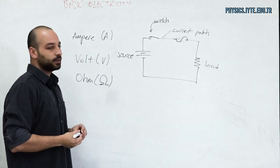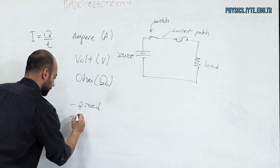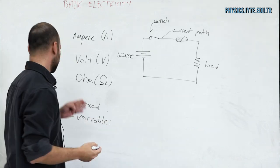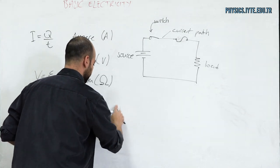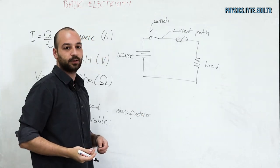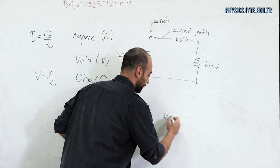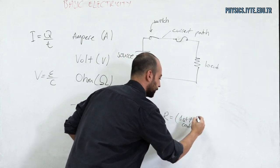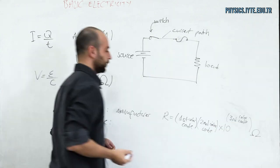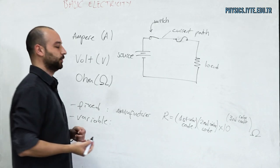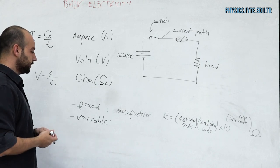There are two main types of resistance: fixed and variable. For fixed resistors, ohmic values are set by manufacturers and indicated by color codes. Using the color-code formula, we can calculate the ohmic values of those fixed resistances.